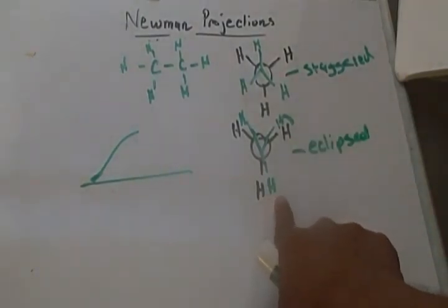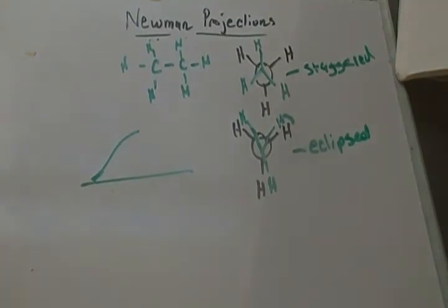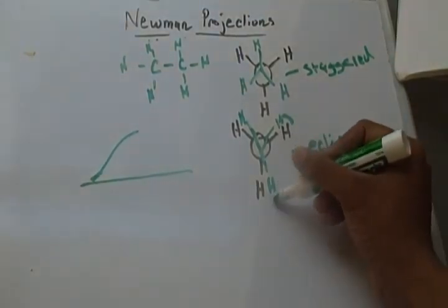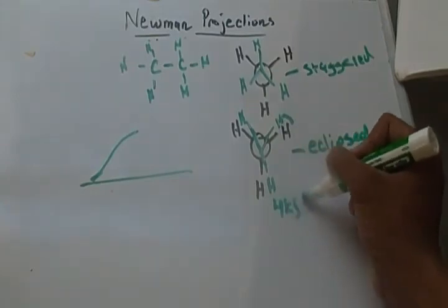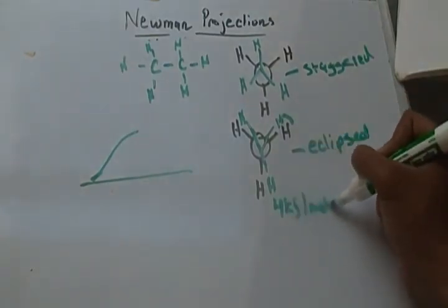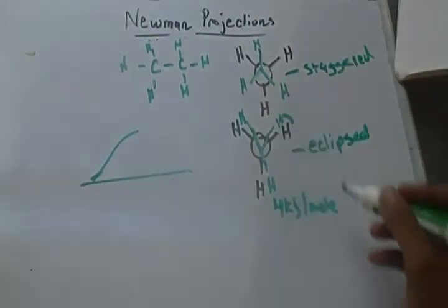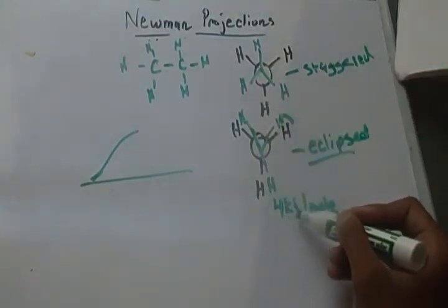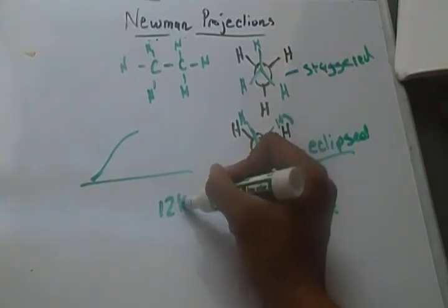And if you look in your book, you can find the energy that's acquired from each hydrogen-hydrogen interaction. It's known as torsional strain, and for each hydrogen-hydrogen interaction there's four kilojoules per mole of energy. And that would be, for this molecule in its eclipsed state, there would be one, two, three interactions. Three times four would be 12 kilojoules per mole.